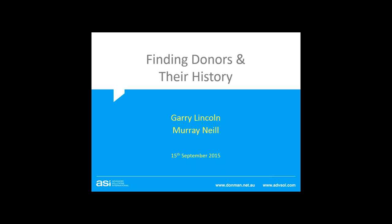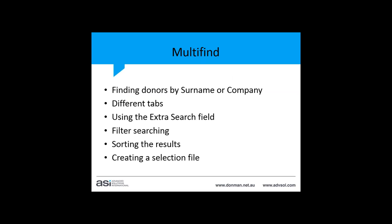Thanks for joining us for our webinar today. What we're going to look at is an extension of what we looked at last month with the donor screen and the fields. We'll go through the Multi-Find screen, different things you can do where we can find people by name, surname, company, different fields, the tabs that come up when you do a search, filter searching, sorting results, and the options of creating a selection file once we have a list of people on the screen.